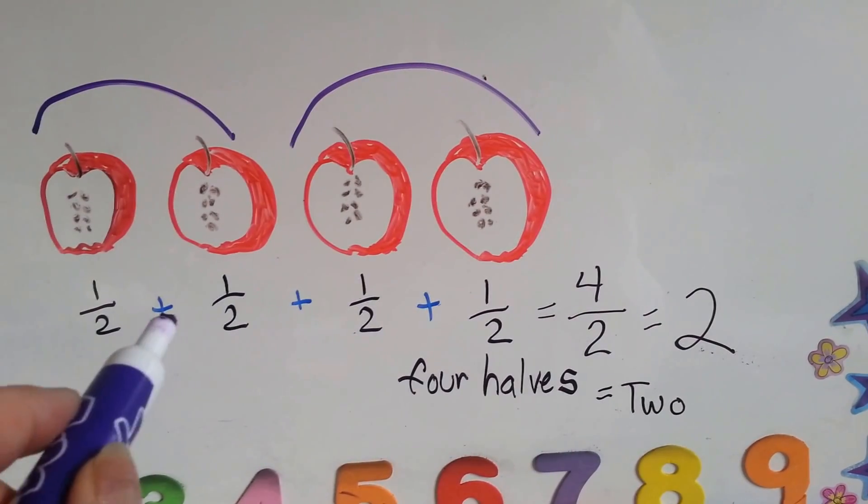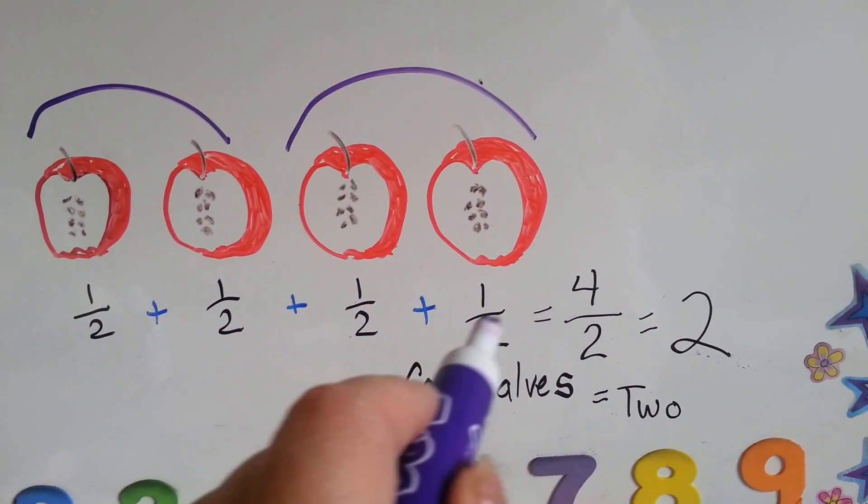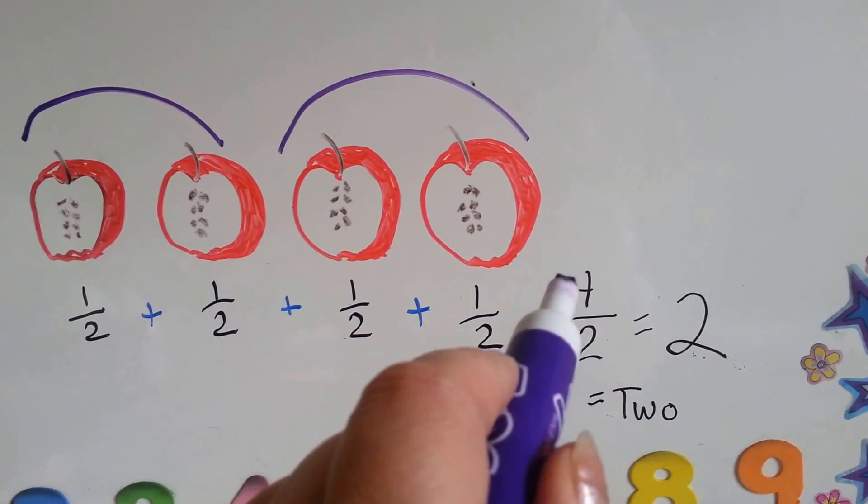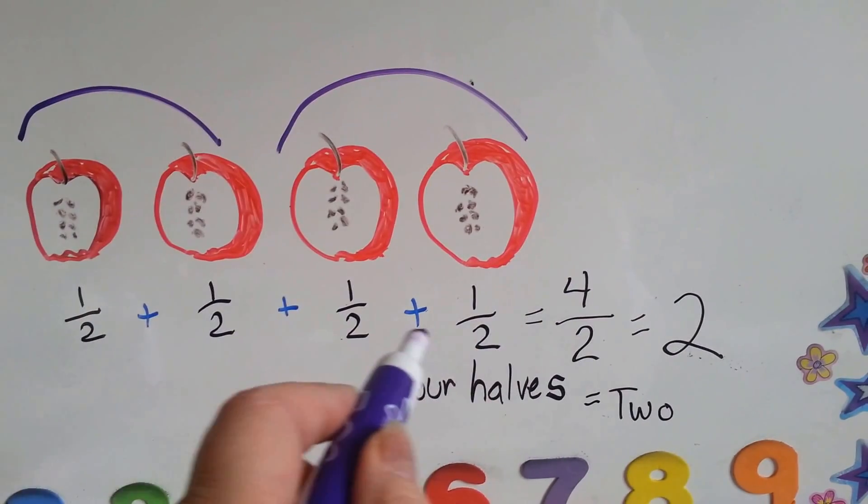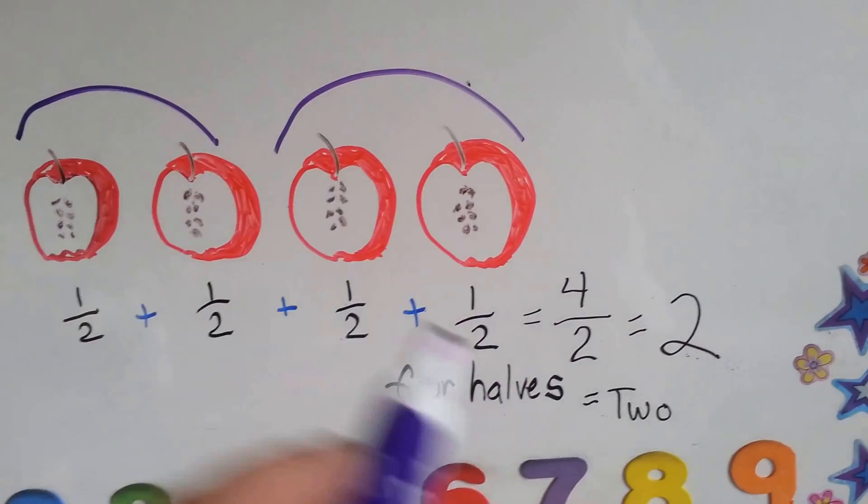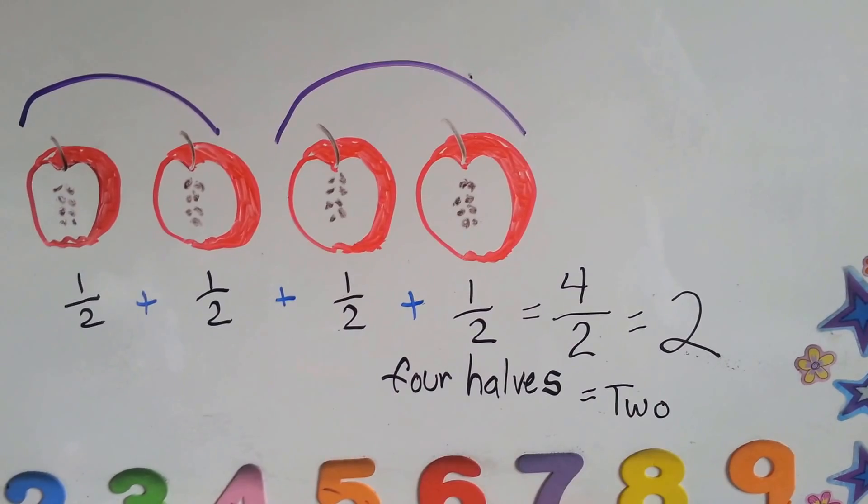So, four halves, half plus half plus half plus half, is one plus one plus one plus one, which is four. You slide the denominators over, because they're the same, and you have four halves. Four halves is the same thing as two whole ones.